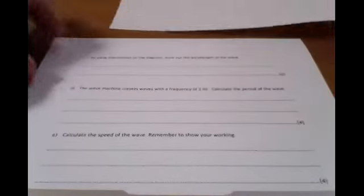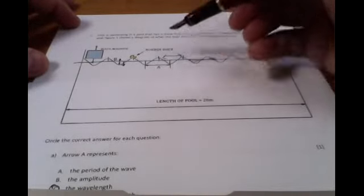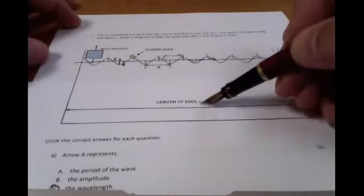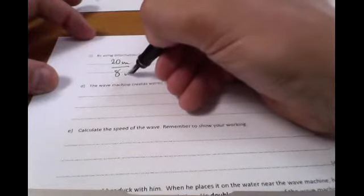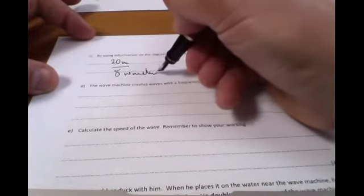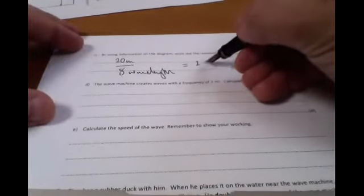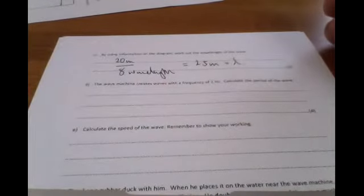Okay, moving swiftly on, it says by using the information work out the wavelength of the wave. Well, we know that we have, how many waves do we have? One, two, three, four, five, six, seven, eight wavelengths in 20 meters. So therefore, we have 20 meters in total divided by eight wavelengths. That gives us a grand total of about 2.5 meters is lambda.